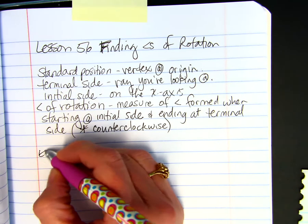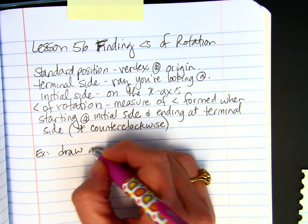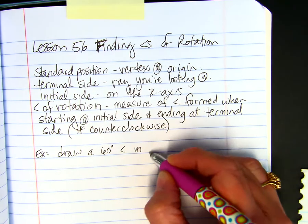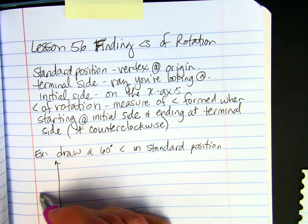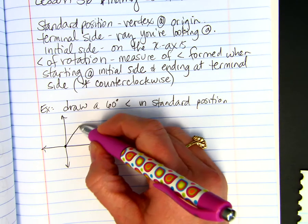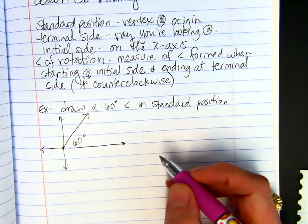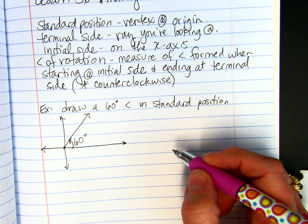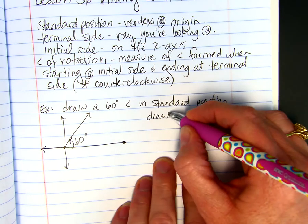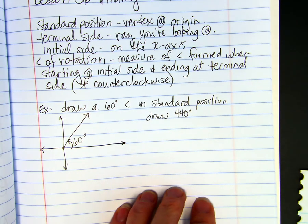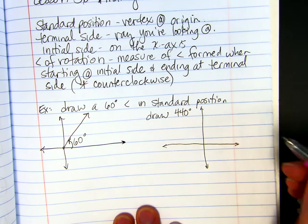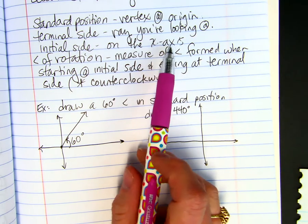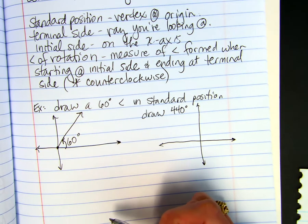Here's some examples. Draw a 60 degree angle in standard position. So you would draw your coordinate plane. The initial side is the x-axis, the vertex on the origin, and you would go counterclockwise 60 degrees, and there's my drawing. How about a 440 degree angle? So which one is the initial and which one is the terminal? Initial is always the x-axis. The terminal is the ray that you look at to see how many degrees away from the x-axis it is.